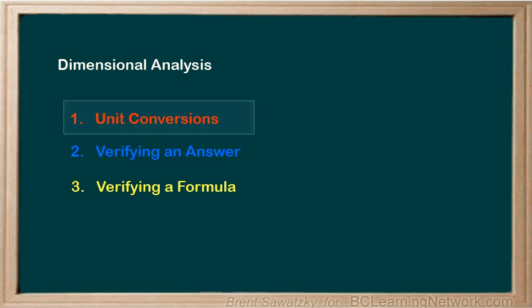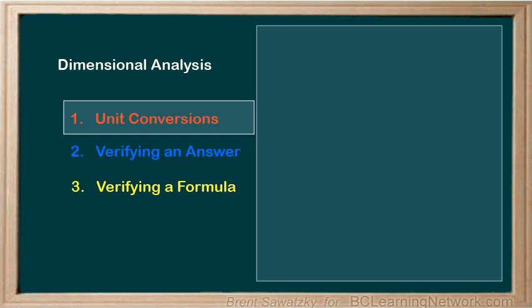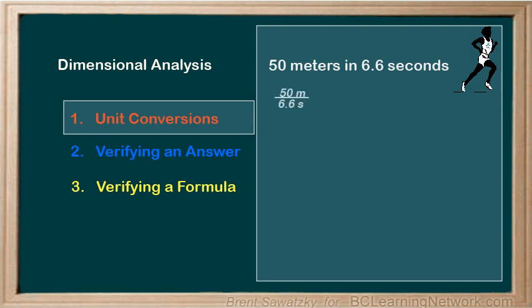When doing unit conversions, it can sometimes be confusing to determine whether we multiply or divide a conversion factor. In fact, there might even be multiple conversion factors involved, which can make it even more confusing. For instance, if we're told that your 50 meter run took 6.6 seconds and you were curious to see your average speed in kilometers per hour, what would you do?